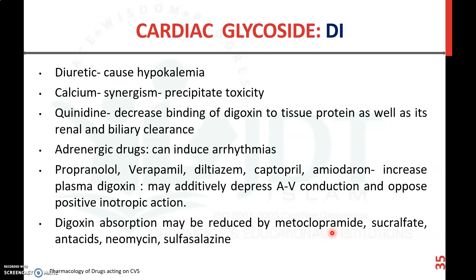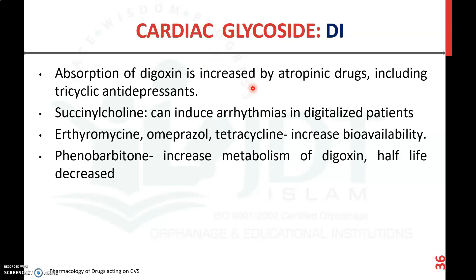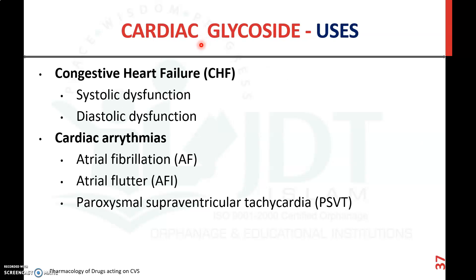Digoxin absorption may be reduced by metoclopramide, sucralfate, neomycin, and sulfasalazine. Absorption of digoxin is increased by atropinics including tricyclic antidepressants. Succinylcholine, a muscle relaxant, can induce arrhythmia in digitalized patients. Erythromycin, omeprazole, and tetracycline increase the bioavailability of cardiac glycosides. Phenobarbital increases the metabolism of digoxin, thereby decreasing its half-life.